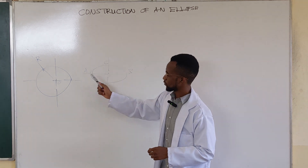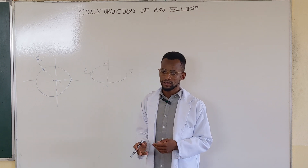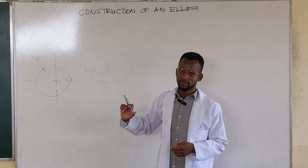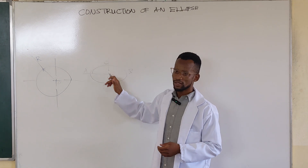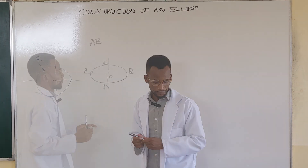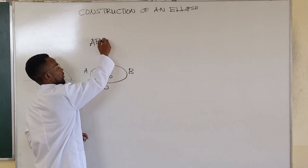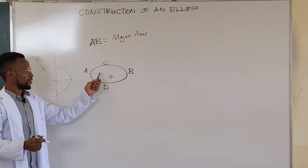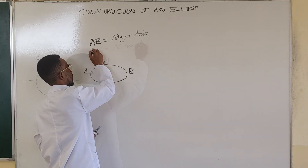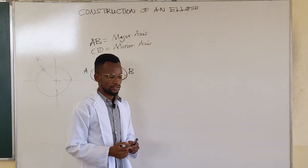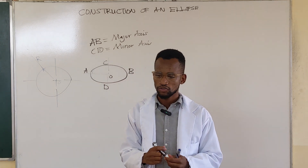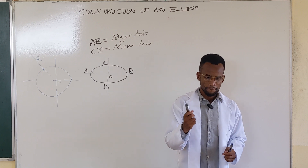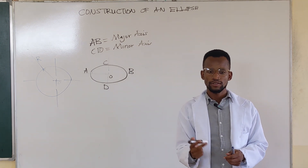AO is equal to OB, and CO is equal to OD. So whilst a circle is defined by the center point and the radius or diameter, the ellipse is defined by these two distances — the longer distance and the shorter one. The distance AB is called the major axis, and the distance CD is called the minor axis. The ellipse will have two axes: the major axis and the minor axis. For you to construct an ellipse, you need the major axis and the minor axis.